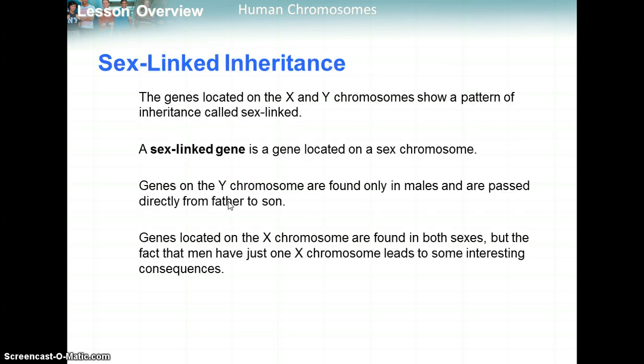Now for sex-linked inheritance: genes located on the X and Y chromosomes show a pattern of inheritance called sex-linked, because the gene is located on a sex chromosome. Genes on the Y chromosome are found only in males and are passed directly from father to son. Genes located on the X chromosome are found in both sexes, but the fact that men have just one X chromosome leads to interesting consequences — these are called sex-linked genes.